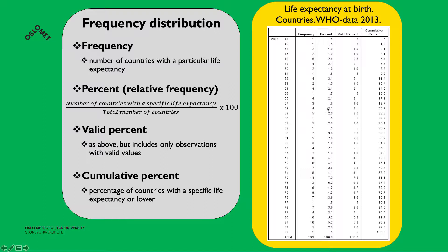The cumulative percentage is the percentage of countries with a specific life expectancy or lower. For example, 17.1% have a life expectancy of 56 or lower, 15% have 55 or lower, and 14.5% have 54 or lower. Additionally, 99.5% of countries have a life expectancy of 82 years or lower.